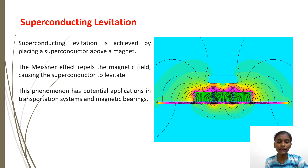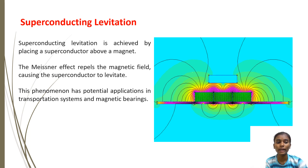Superconducting levitation: when a superconductor enters its superconducting state while close to a powerful magnet, the magnetic field penetrates the YBCO by means of quantized flux lines called vortices, causing it to levitate above the magnet. The Meissner effect expels the magnetic field, causing the superconductor to levitate.